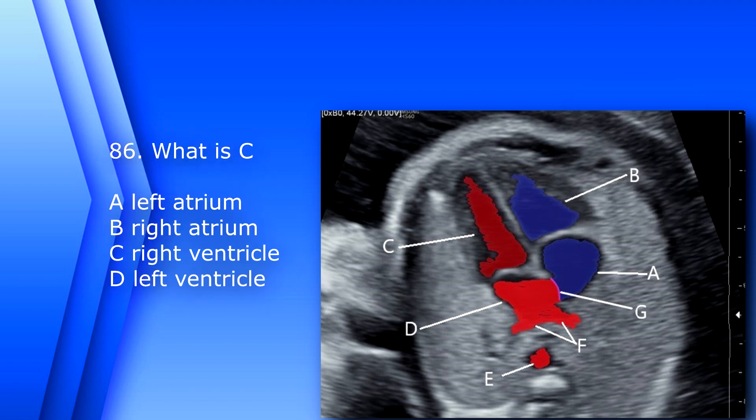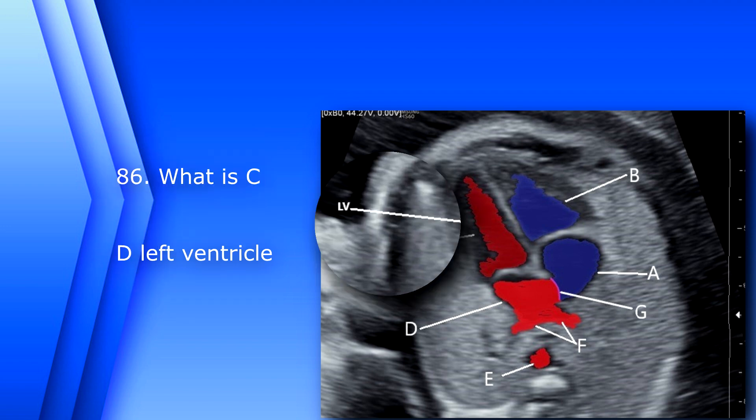Question 86. What is C? A. Left atrium. B. Right atrium. C. Right ventricle. D. Left ventricle. The answer is D, left ventricle.